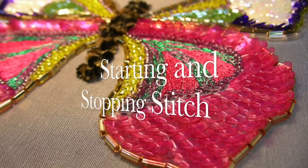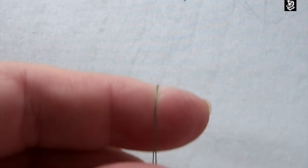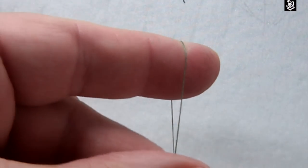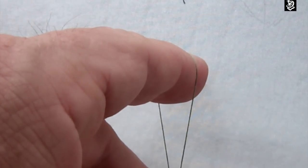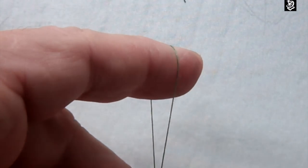One of the most difficult parts of learning tambour beading is mastering the beginning and ending stitch. To start, you simply lay the thread over your finger, like that.